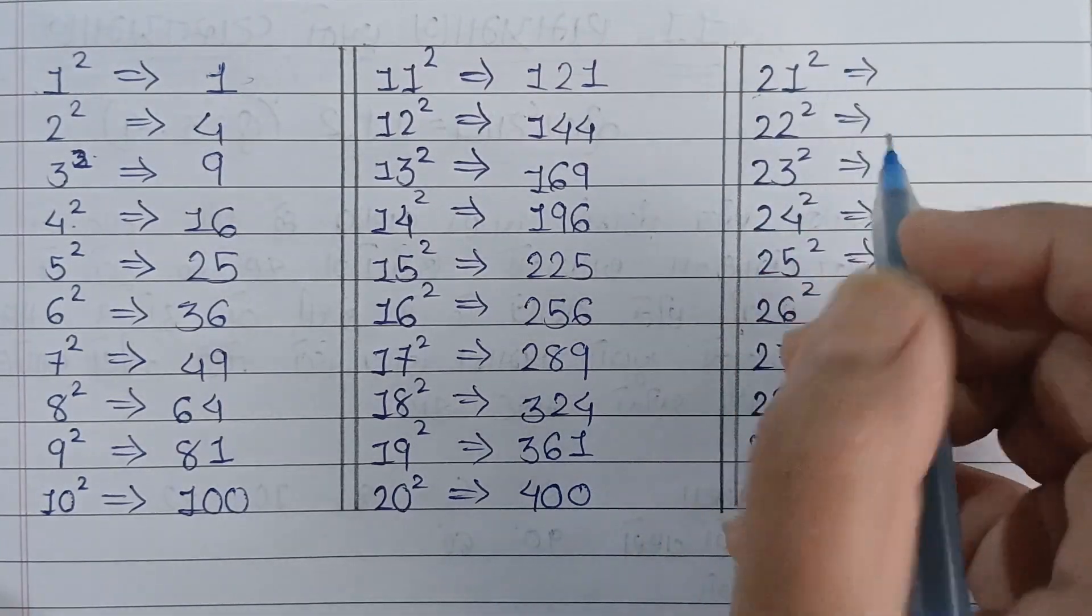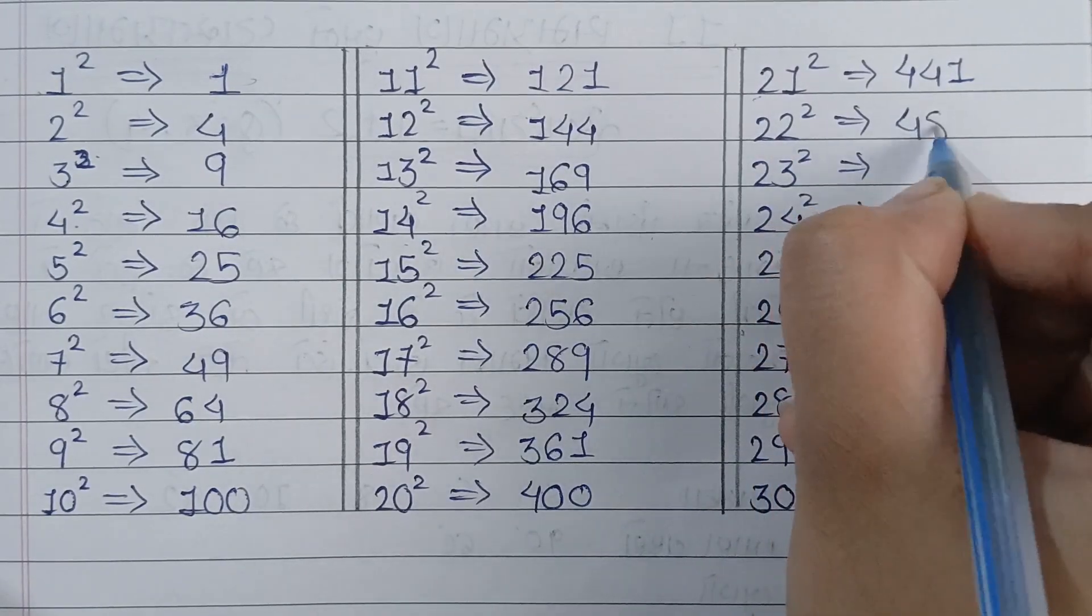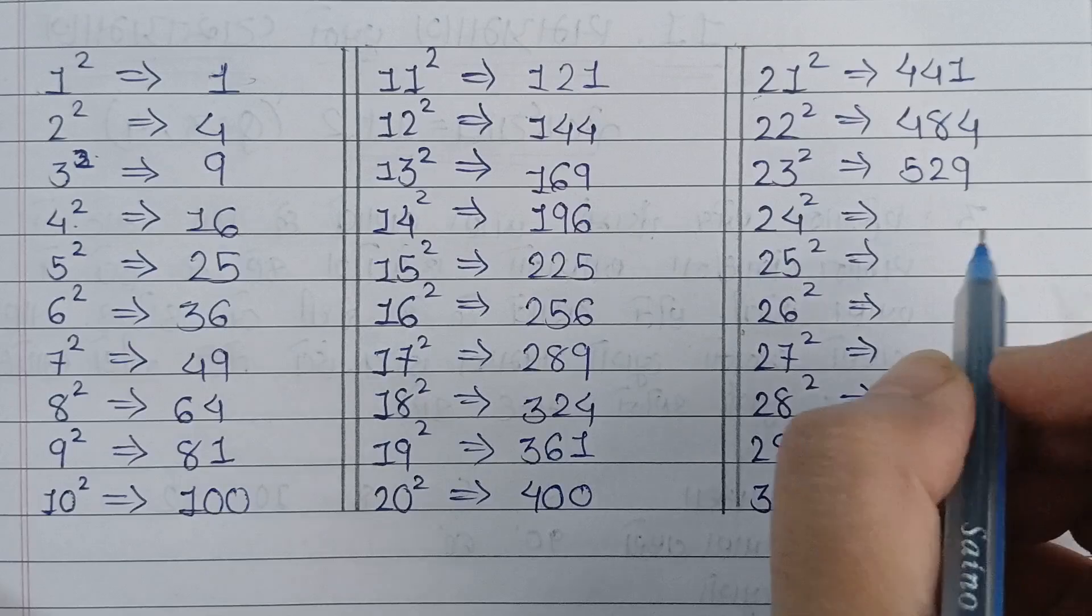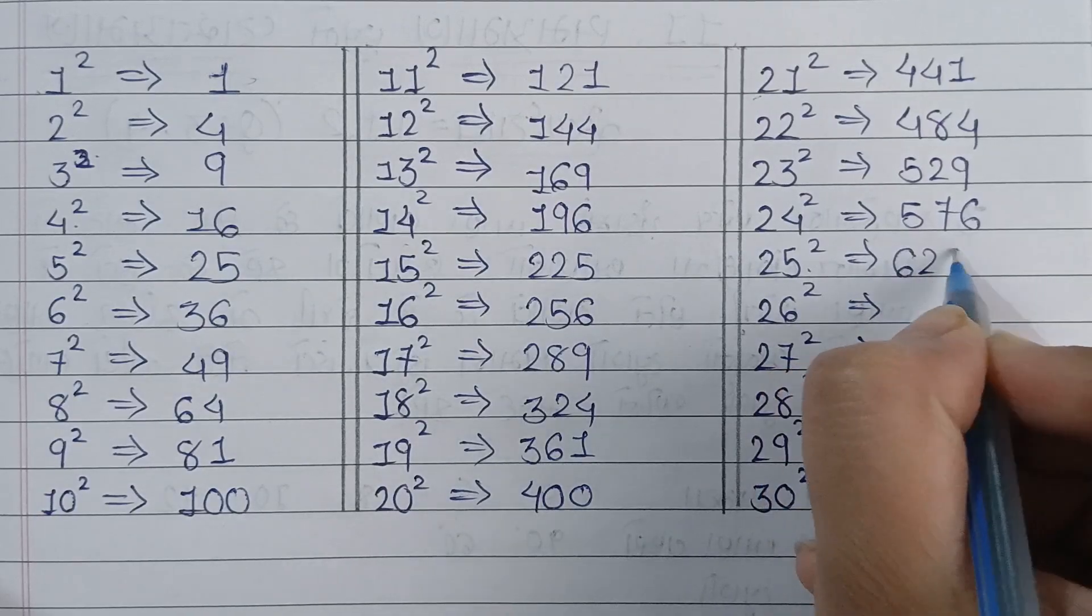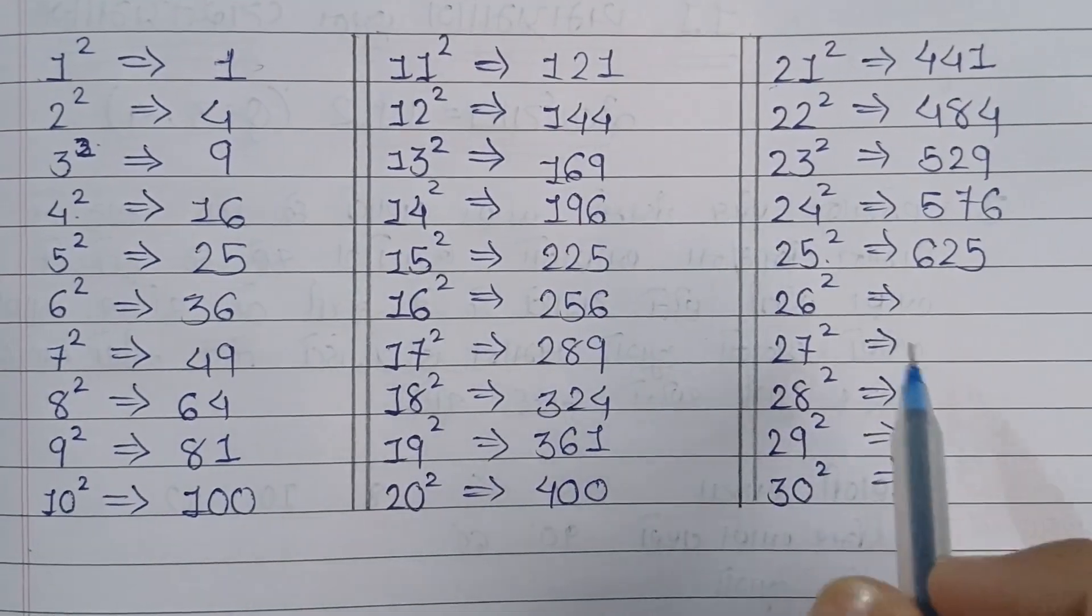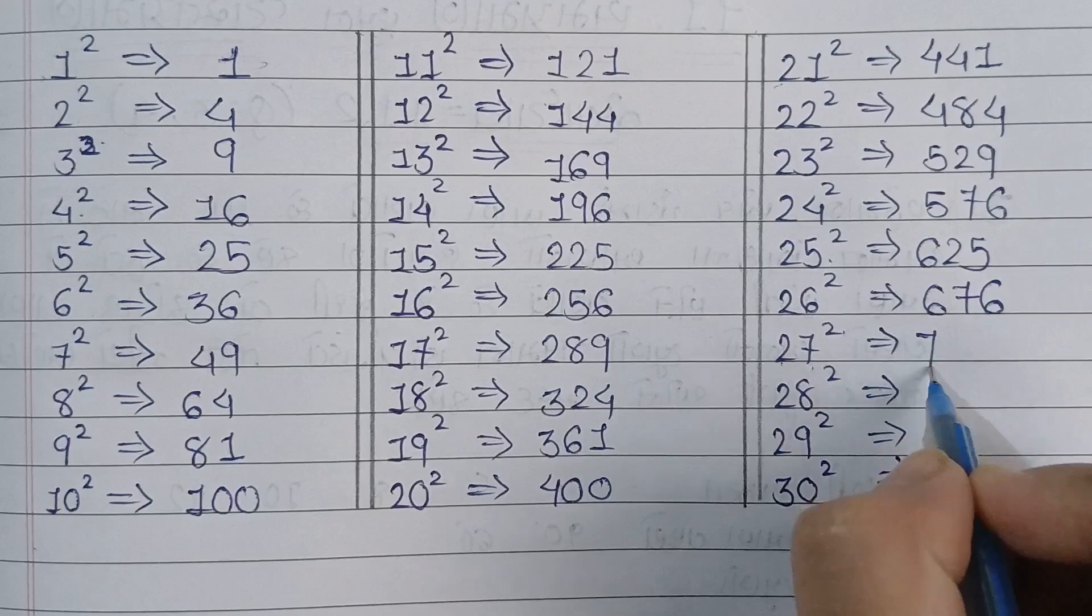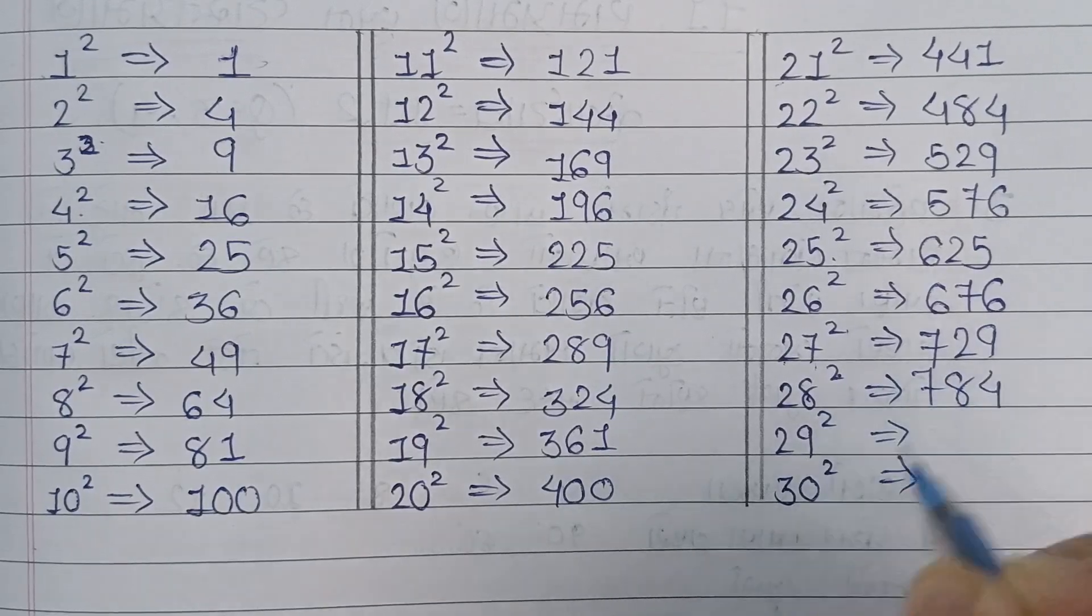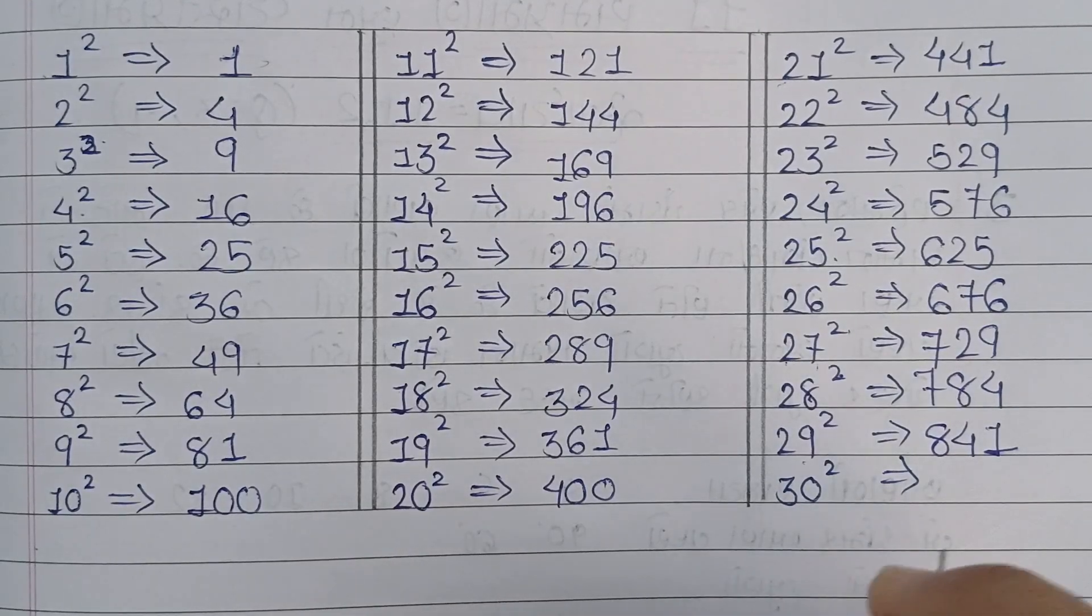Now, 21 square is equal to 441, 22 square is equal to 484, 23 square is equal to 529, 24 square is equal to 576, 25 square is equal to 625. 26 square is equal to 676. Then, 27 square is equal to 729, 28 square is equal to 784, 29 square is equal to 841, and 30 square is equal to 900.